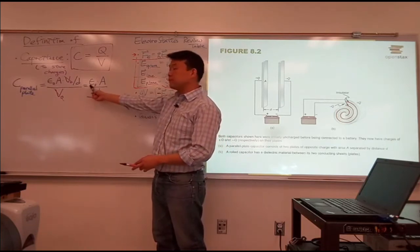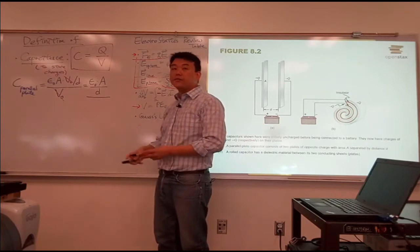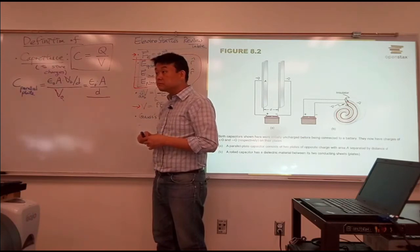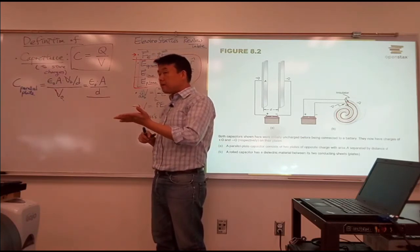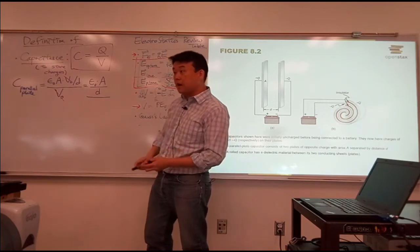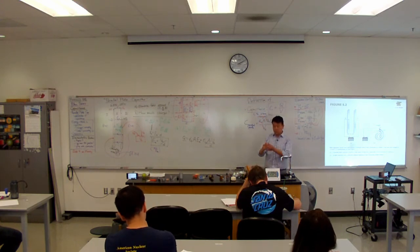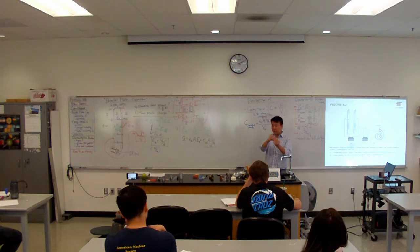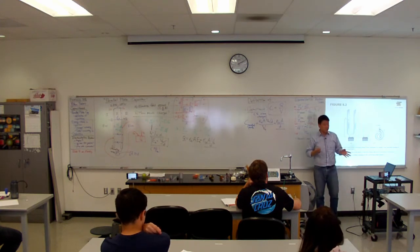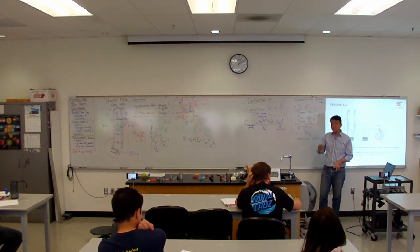When we plug in this expression here, epsilon naught area times V naught over D. You realize, I don't know if I should say surprise or, I mean, we actually should have expected this to happen. If you are saying capacitance is the property of the device, then the voltage should not end up in the final expression. In this derivation, you see voltage canceling out. So that capacitance is combination of these quantities: epsilon naught times area over D. Does anything about these three parameters occurring in the capacitance of parallel plate, anything here surprise you?